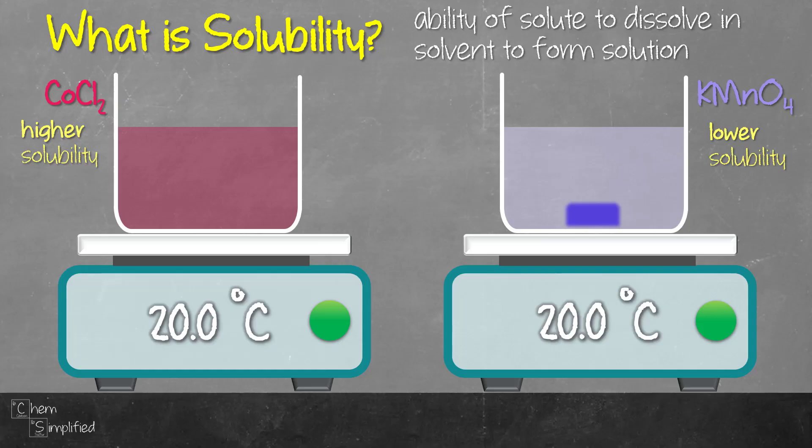Now if we were to get technical, at 20 degrees Celsius in 100 ml of water, we can dissolve 52.9 grams of COCl2. Whereas at the same condition for KMnO4, we can only dissolve 6.34 grams. And that makes sense, because for the same amount of water, which is 100 ml, at the same temperature, 20 degrees Celsius, we can dissolve 52.9 grams of COCl2 as compared to only 6.34 grams of KMnO4, which is why we have quite a lot of KMnO4 solid undissolved.